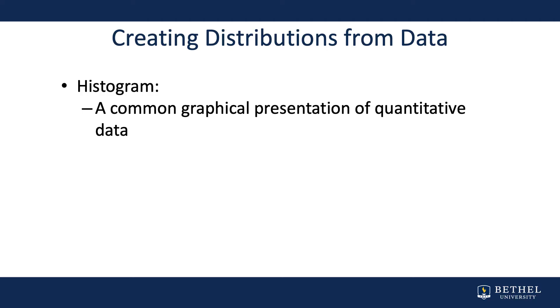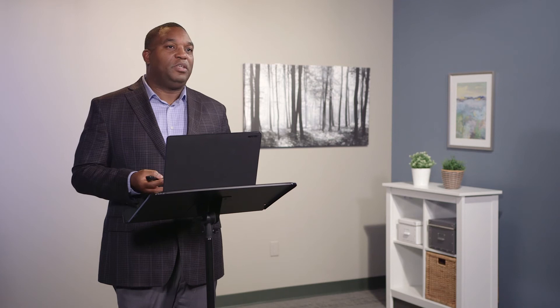One way to display a frequency distribution is something called a histogram — a graphical representation of quantitative data. If you've used Microsoft Excel or read a report from just about anywhere, it's got a chart with bars. Usually those bars represent data for whatever they're trying to present to you, and more than likely that is a histogram or the representation of frequency distribution data.